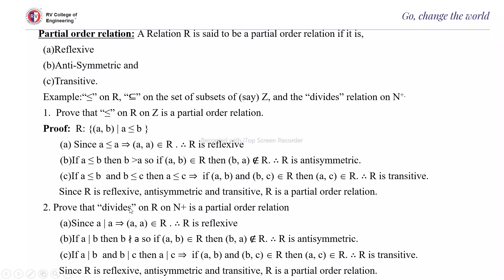Likewise, the divides relation on N+ is a partial order relation. Since every number divides itself, it is reflexive. And if a divides b, then b does not divide a (in general), so if (a,b) belongs to R, (b,a) does not belong to R — therefore R is anti-symmetric. And if a divides b and b divides c, then a divides c — therefore it is transitive. Since R is reflexive, anti-symmetric, and transitive, R is a partial order relation.